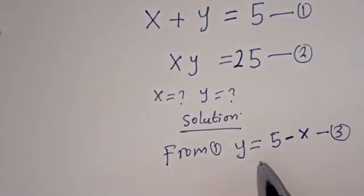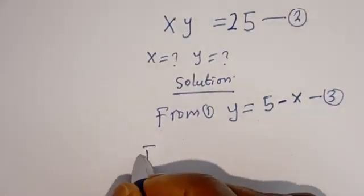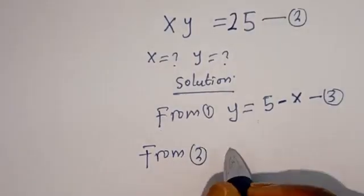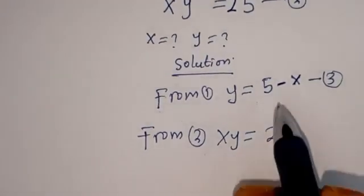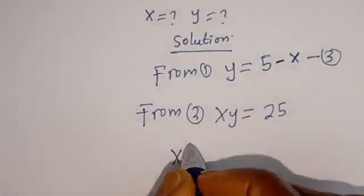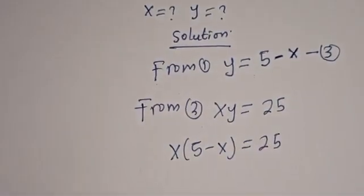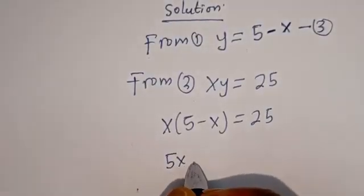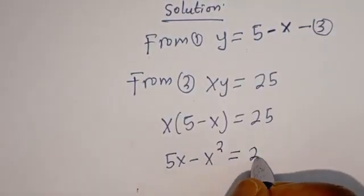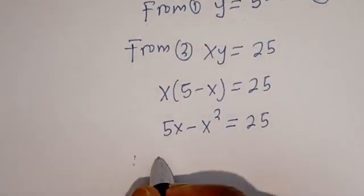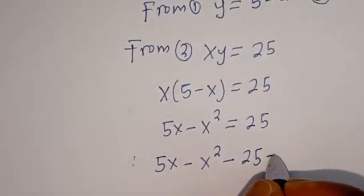Then we can now substitute equation 3 into equation 2. From equation 2: xy is equal to 25. When y is equal to 5 minus x, we have x times (5 minus x) is equal to 25. Then x times 5 is 5x, minus x times x is minus x squared, is equal to 25. Then we have 5x minus x squared minus 25 is equal to 0.